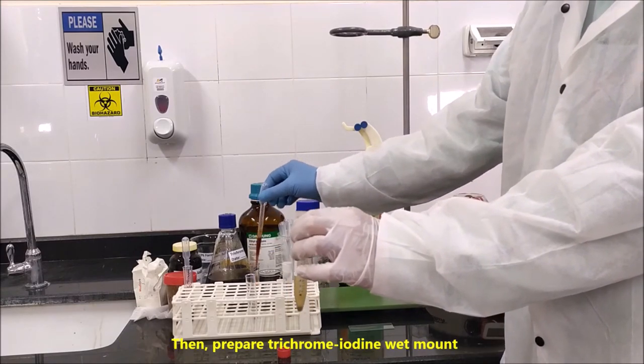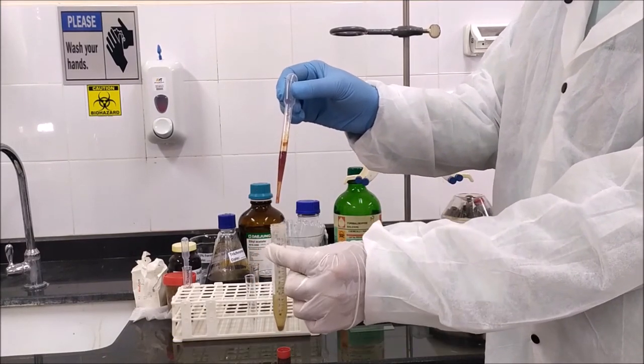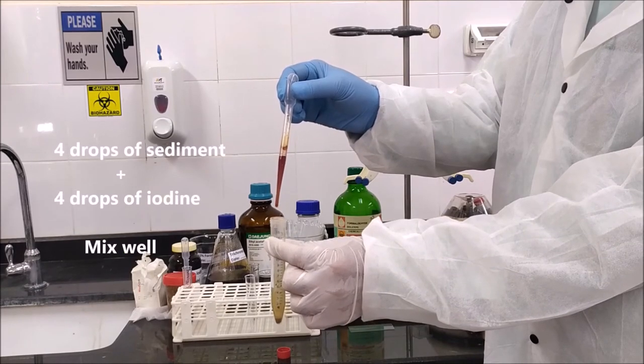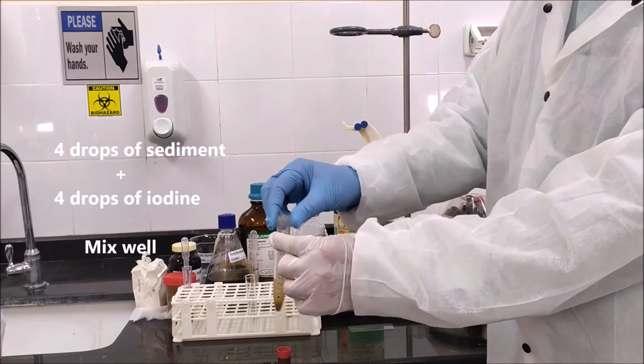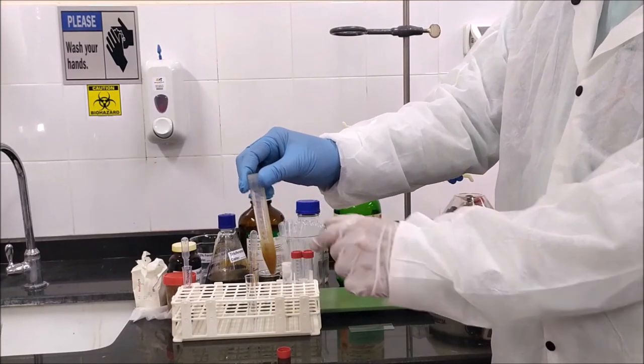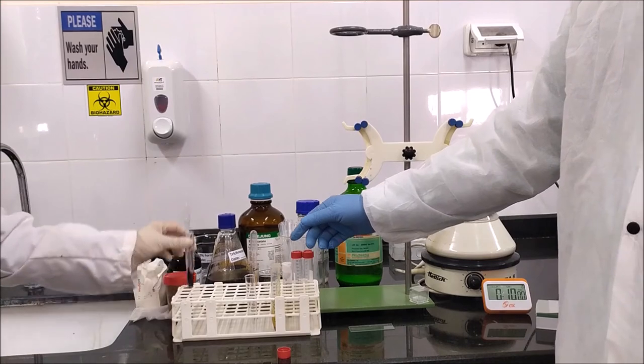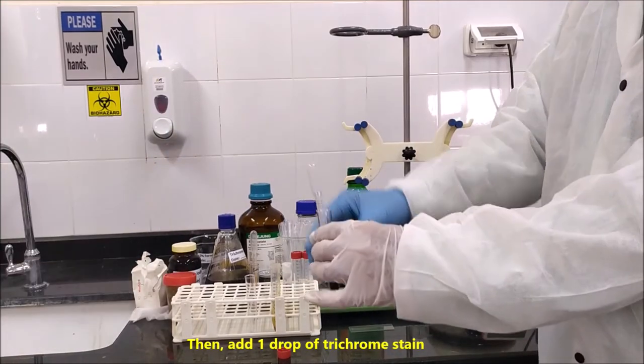Then prepare iodine trichrome wet mount. Four drops of sediment plus four drops of iodine and mix well. Then add one drop of trichrome stain.